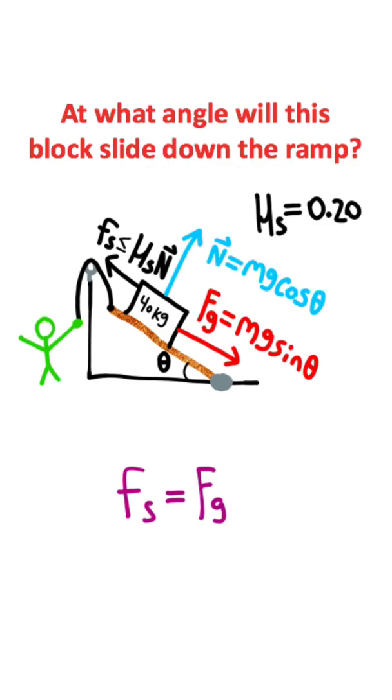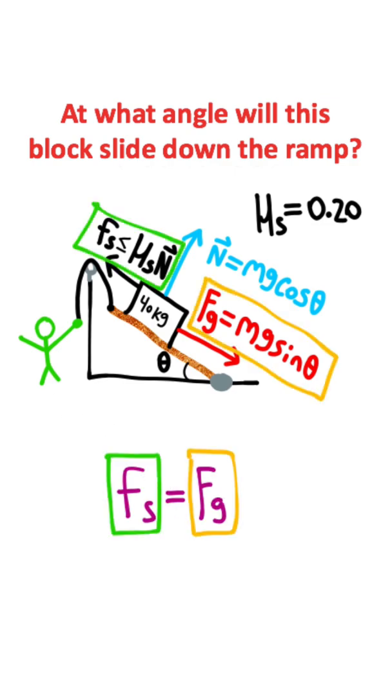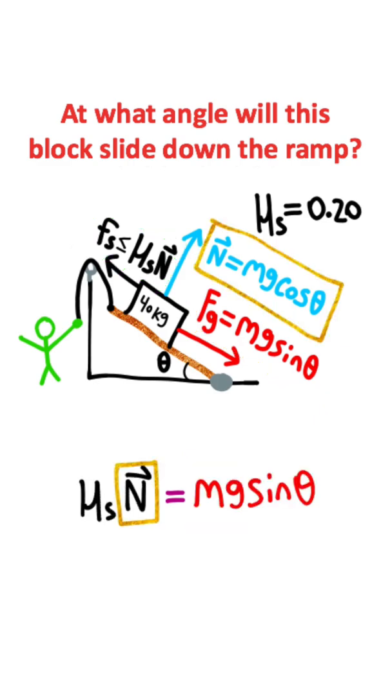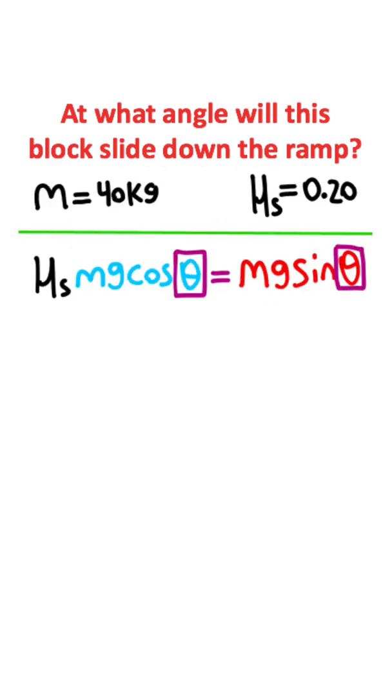So we need to figure out the exact moment that the force of gravity and static friction are equal to each other. Now we have the two mathematical relationships written down here, so we can plug them into this equation. We also have the normal force right here, and we're looking for our angle theta. That's what we're trying to find.